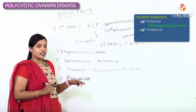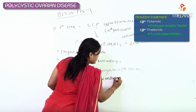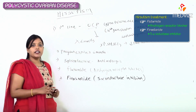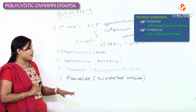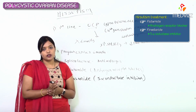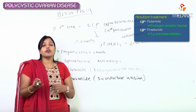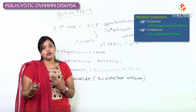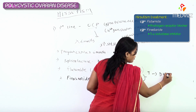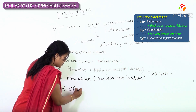Next is Finasteride, which is a 5-alpha reductase inhibitor. Testosterone must be converted to dihydrotestosterone (DHT) — the potent form — by the enzyme 5-alpha reductase. When finasteride inhibits this enzyme, potent testosterone is not formed, so no hirsutism. You also have a cream called eflornithine hydrochloride available for treatment.